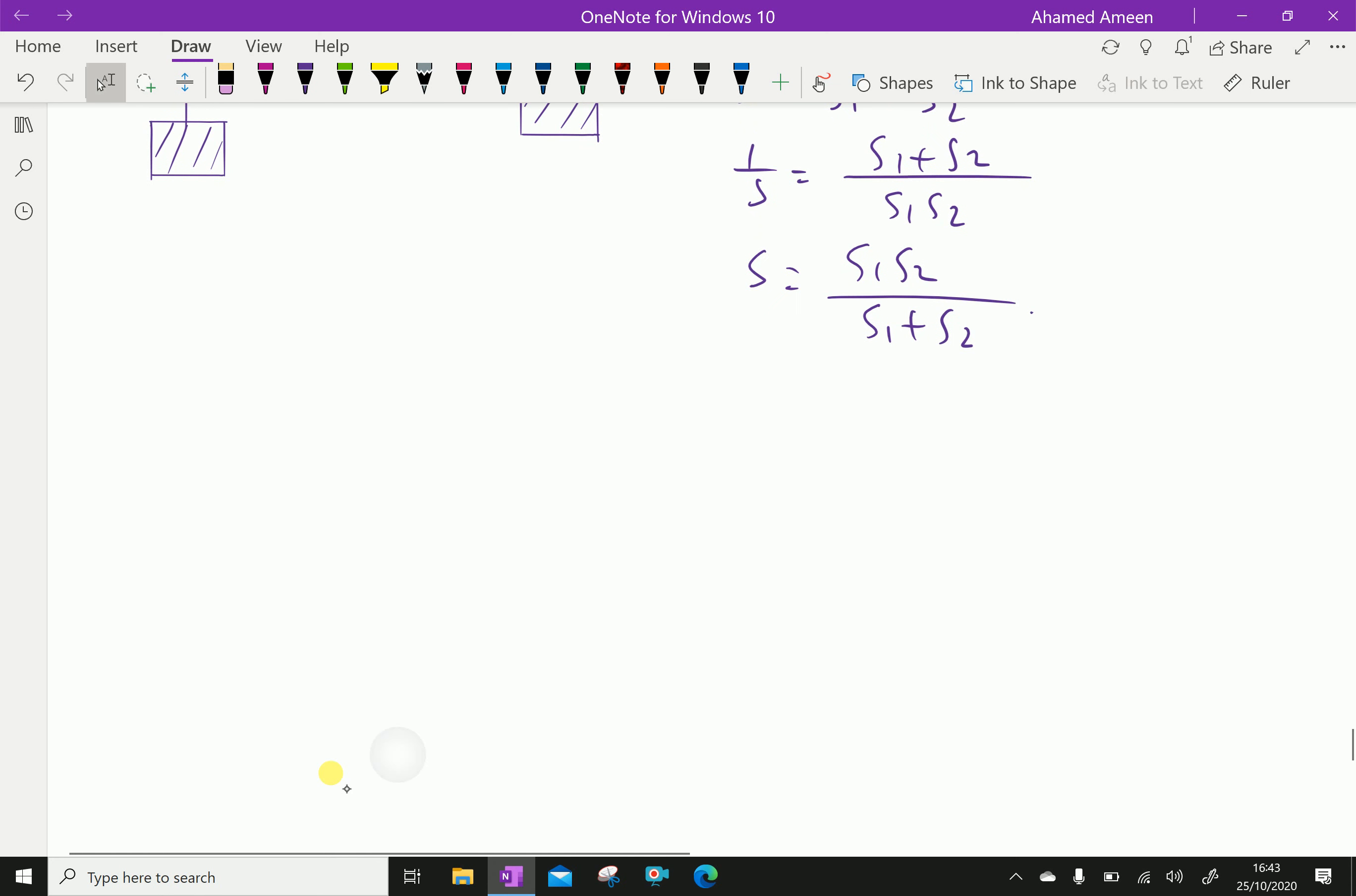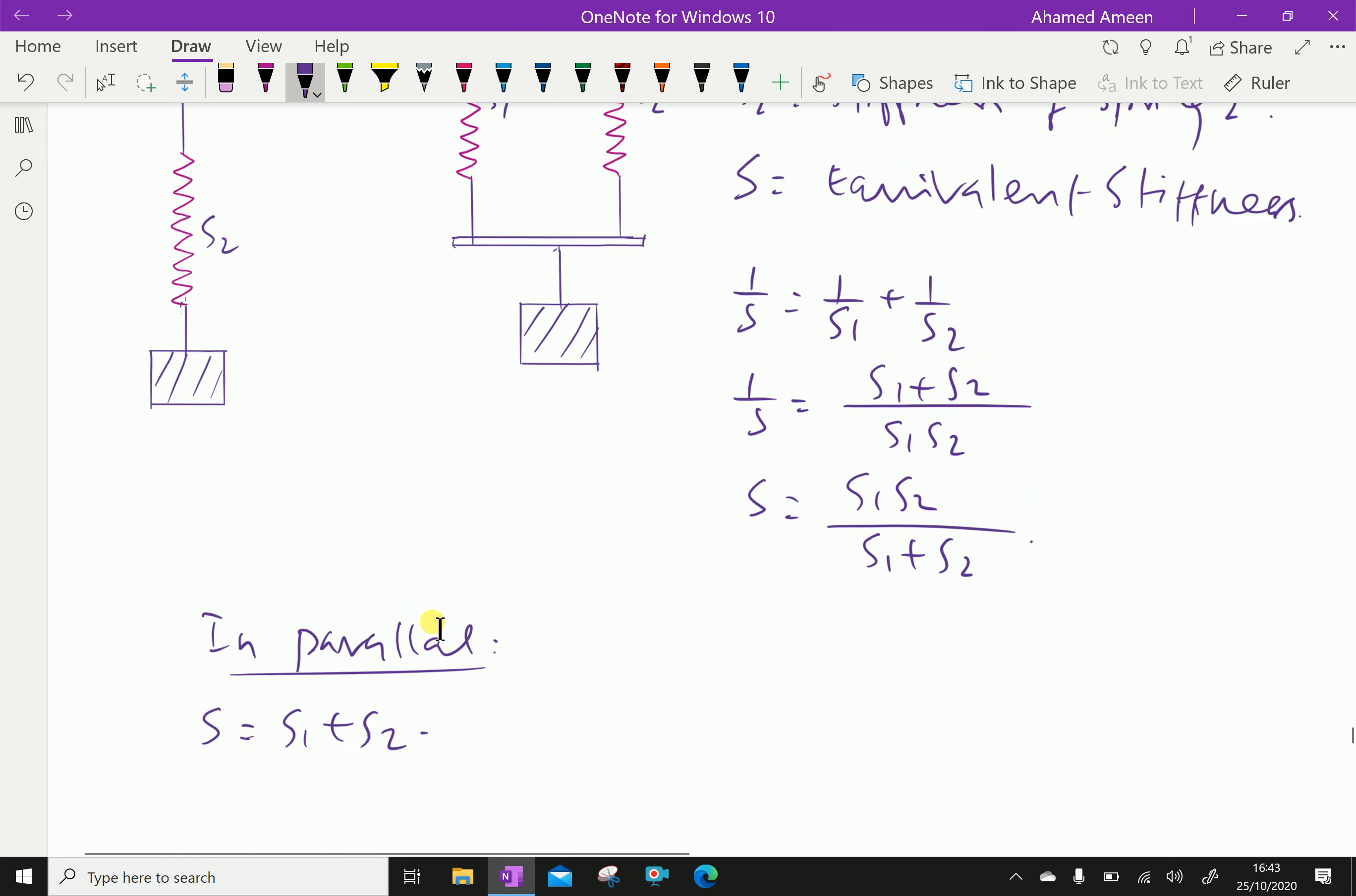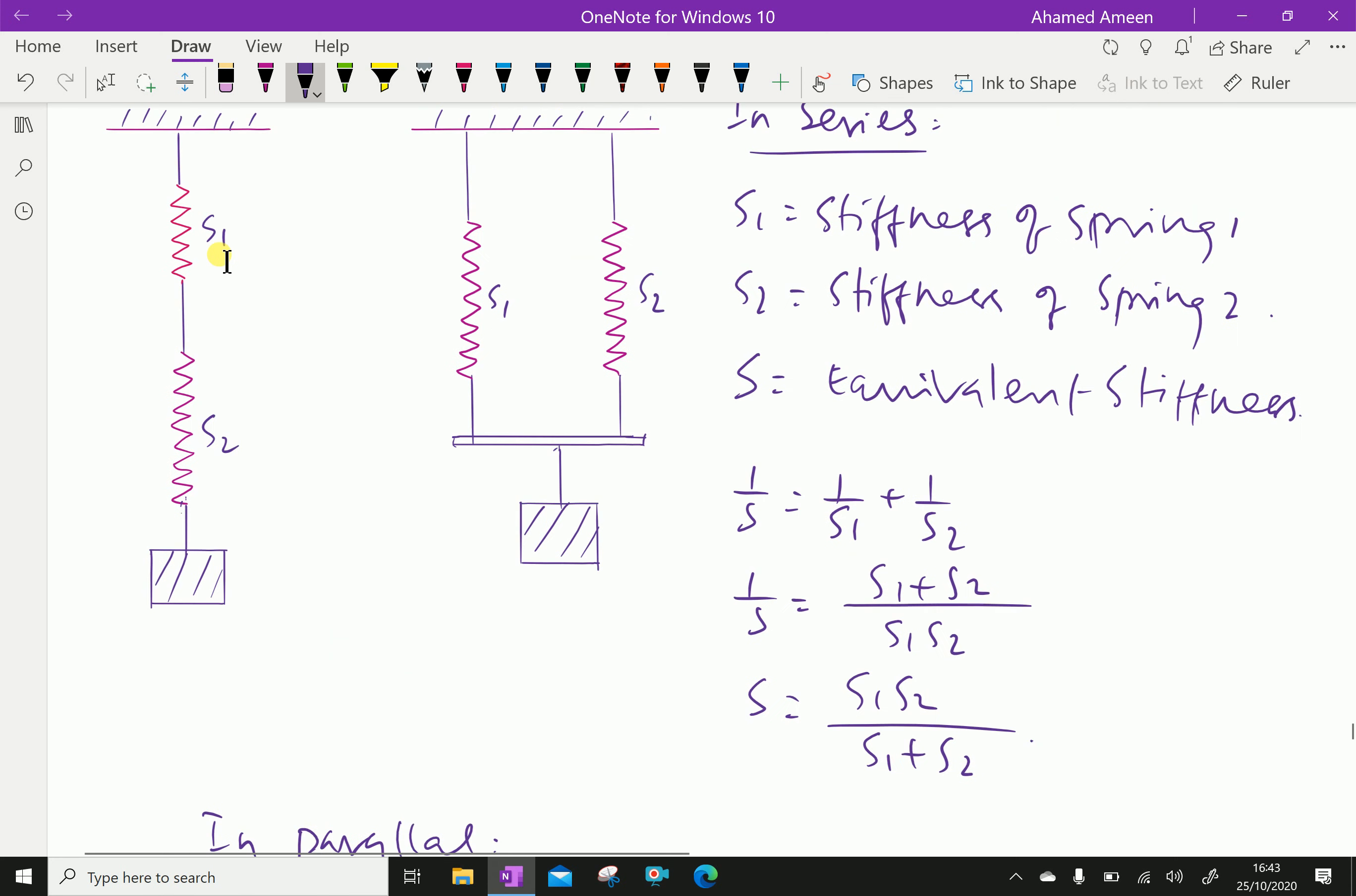Next in parallel, S equal S1 plus S2. If the springs are more in number, in series it's 1 over S equal 1 over S1 plus 1 over S2 plus 1 over S3, 1 over S4 and so on.